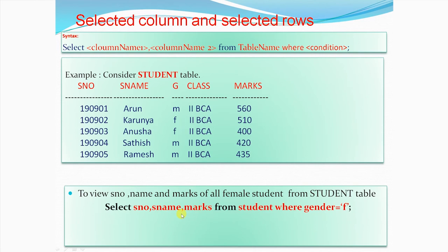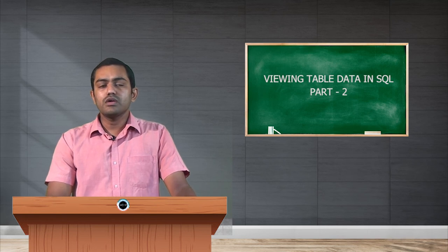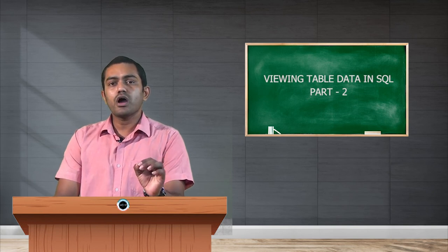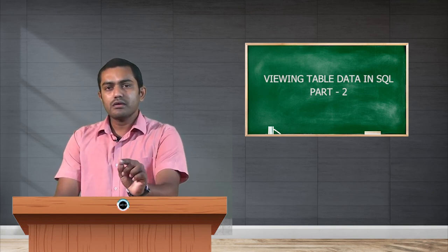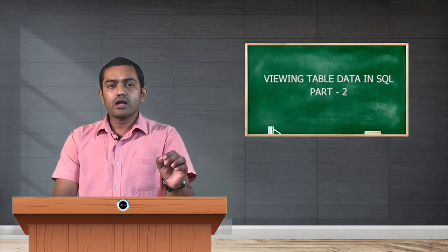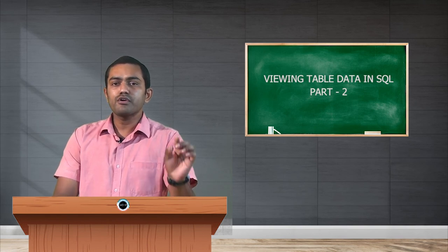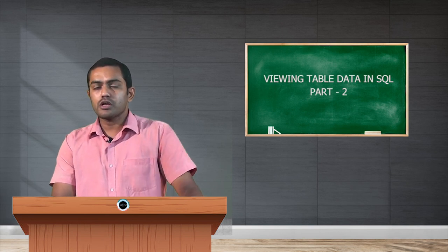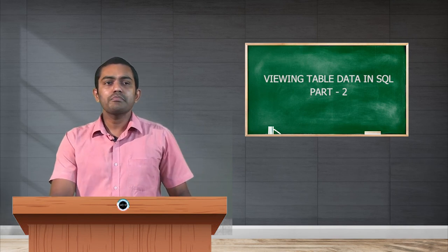The query is: SELECT student_number, student_name, marks FROM student WHERE gender = 'F'. The value given after the equal sign is case sensitive — if you write a small letter f, only records with small letter f will be displayed. If the data is stored with capital letter F, those records will not be displayed. We need to be careful about case sensitivity when specifying conditions.